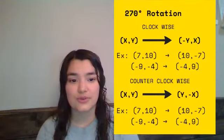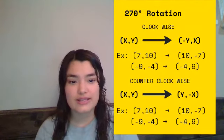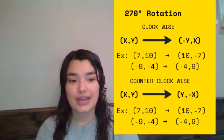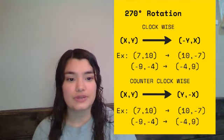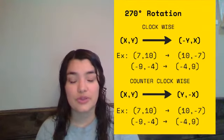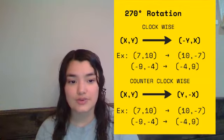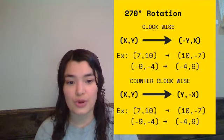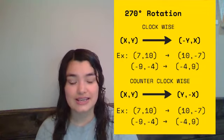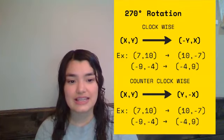In a 270 rotation clockwise, again your x and your y are going to flip. Remember that they're going to flip, but with a clockwise rotation, the y will be the one that changes to its opposite sign. So again, two examples, (7,10). So which one changes its sign? The 7.